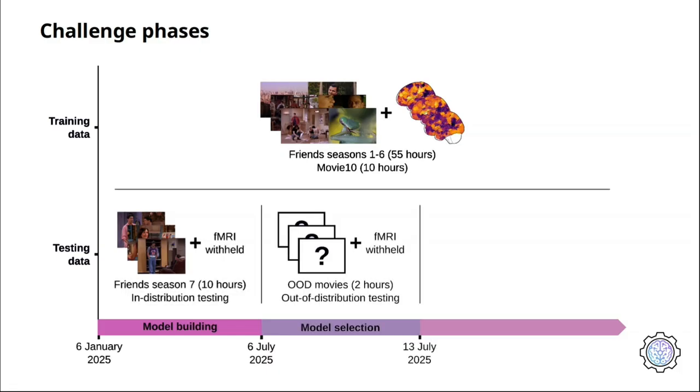The second challenge phase is the model selection phase, which will run for one week from July 6 until July 13. During this phase, the winning models will be selected only based on the accuracy of their predicted fMRI responses for the out-of-distribution movie stimuli. For this, we will provide two hours of out-of-distribution movie stimuli and withhold the corresponding fMRI responses.